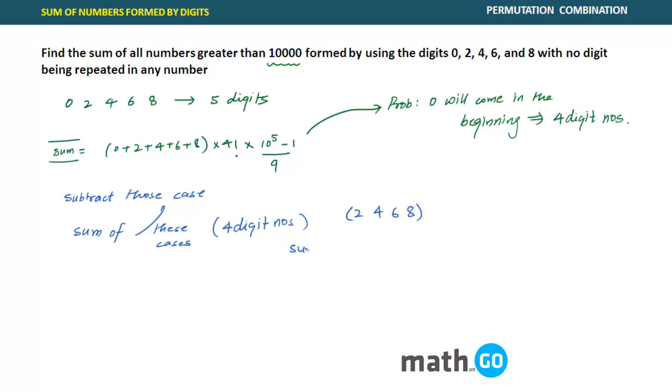What will be their sum? Their sum would be, add them, 2 plus 4 plus 6 plus 8. Now the value of n is not 5, it is 4. And this will become 10 raised to the power 4 minus 1 by 9. And you want to subtract these. So the answer to this particular problem will be equal to...